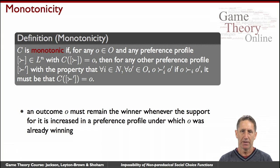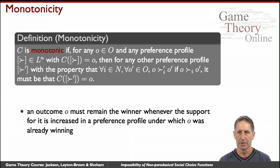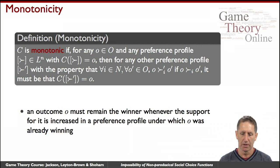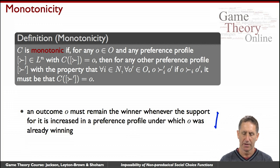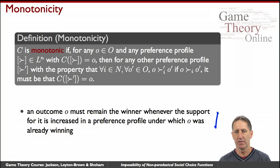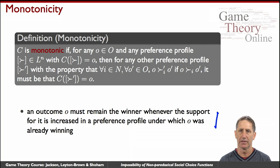In place of independence of irrelevant alternatives, we'll have the notion of monotonicity. Informally, it says that if you have a winner and we increase the support for that candidate, they would still remain a winner.